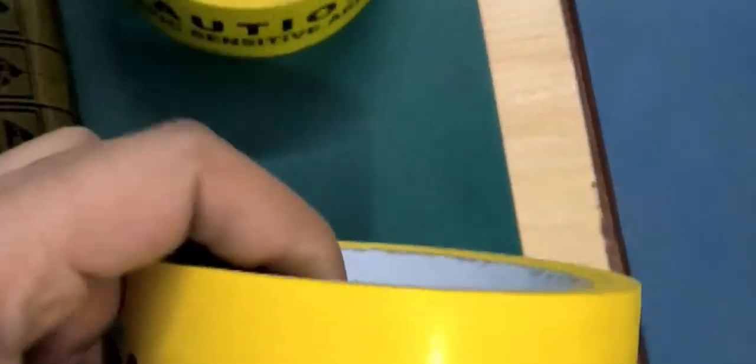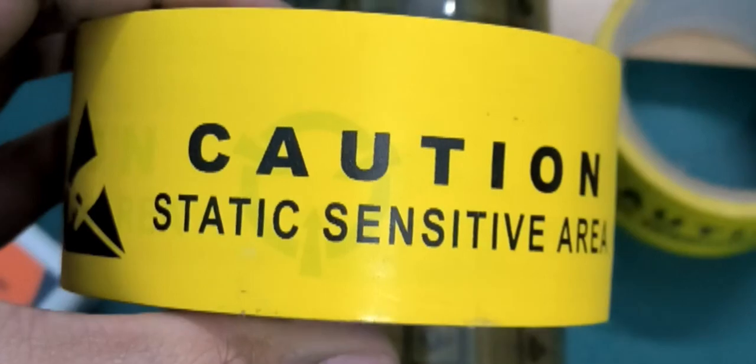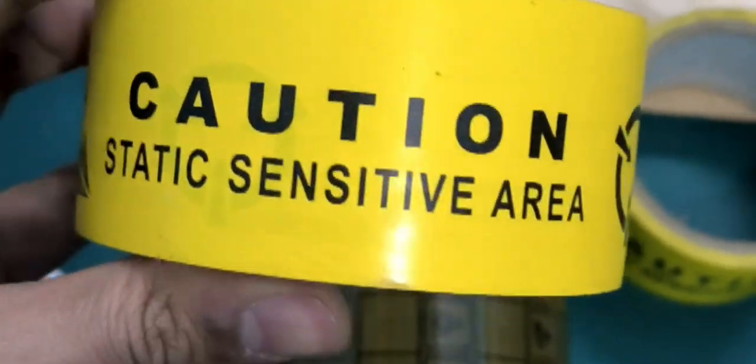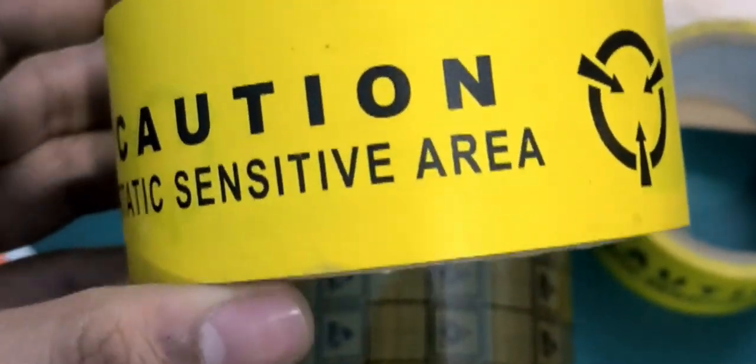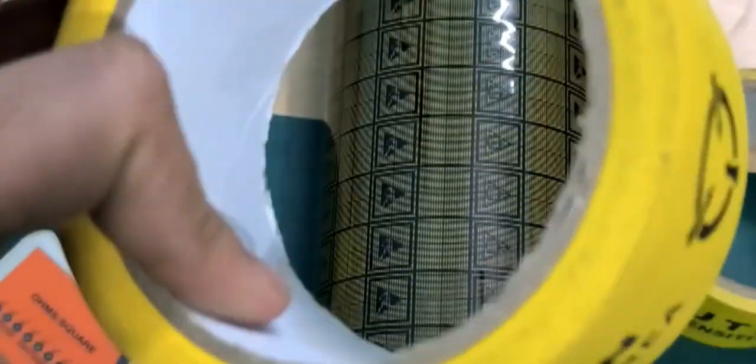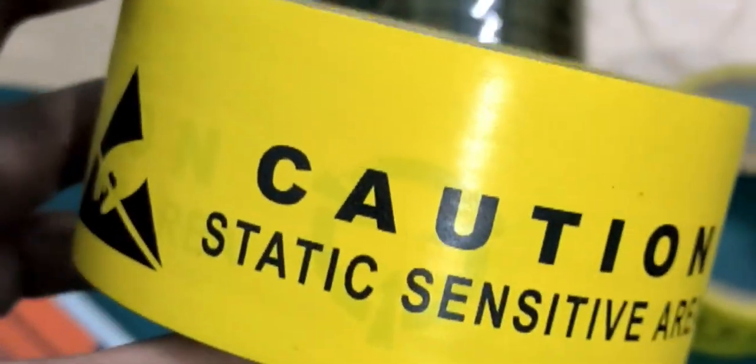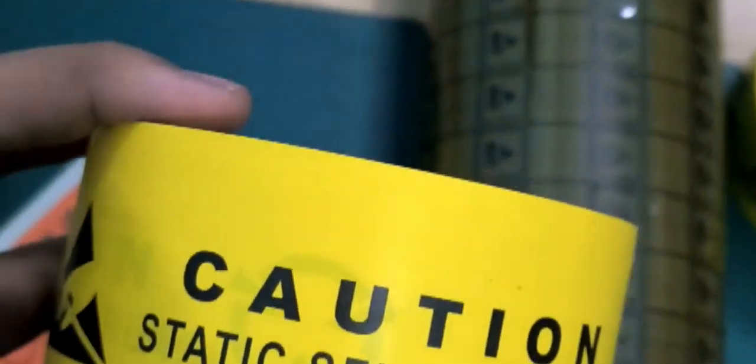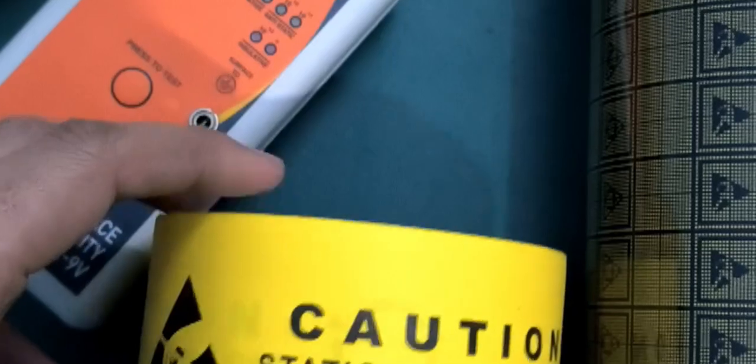We have first this one, the most commonly used ESD caution tape, also known as a caution tape. This tape is made of PVC. This tape is actually used only for marking. This is not actually ESD. It's just used for marking, for caution.